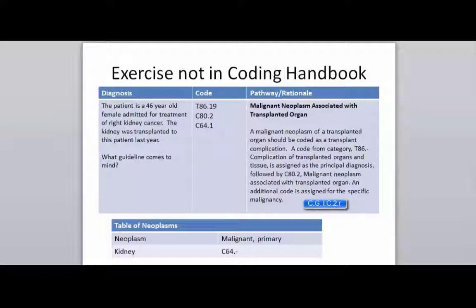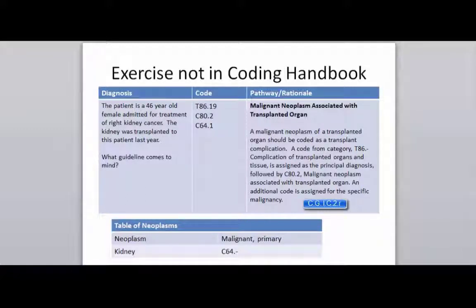A malignant neoplasm of a transplanted organ should be coded as a transplant complication. The guideline tells us we're going to use a code from category T86, which is complication of transplanted organs and tissues, as our principal code, followed by C80.2, malignant neoplasm associated with a transplanted organ, and then an additional code assigned for the specific malignancy.